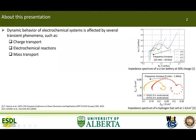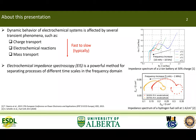The dynamic behavior of electrochemical systems is affected by several transient phenomena, including charge transport, electrochemical reactions, and mass transport. Because these processes occur at different timescales, we can analyze them separately by looking at the frequency composition or the dynamic response of the cell. This is the main idea of the experimental technique called electrochemical impedance spectroscopy, or EIS, where we analyze the dynamic behavior of electrochemical systems based on their impedance spectra.